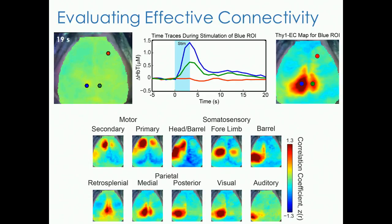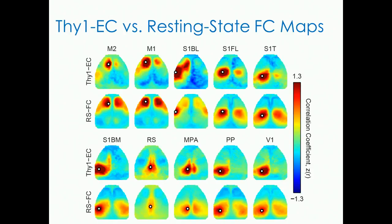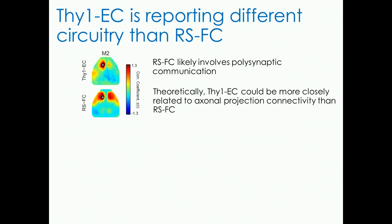Comparing these to resting state maps is really interesting. The resting state maps don't show any of this rich connectivity structure — the distinct islands are either nonexistent or obscured, and in general they're all very bilaterally symmetric without this richness. Resting state functional connectivity tends to involve polysynaptic communication, mediated by subcortical structures like the thalamus, which can excite certain brain regions simultaneously. We hypothesize that these Thy1-based maps are more closely related to axonal projection connectivity than the resting state data.